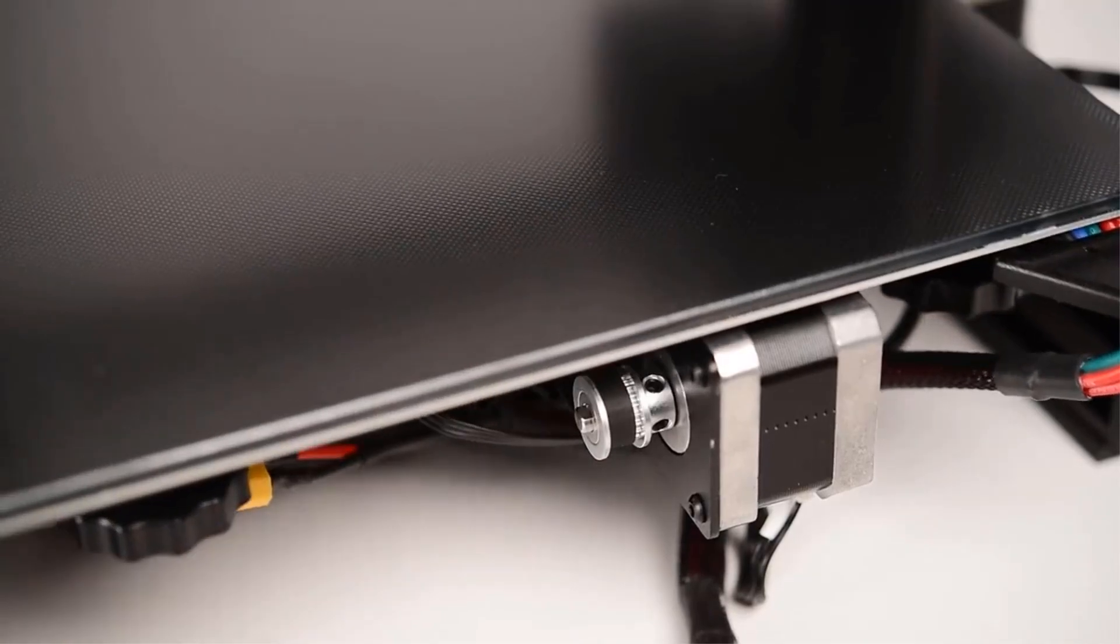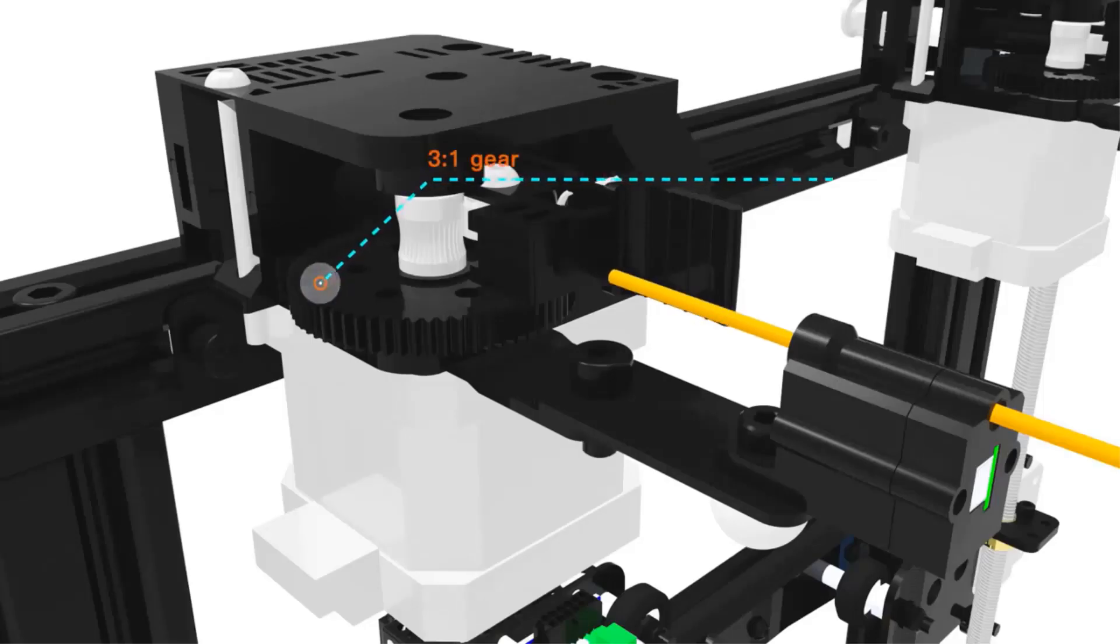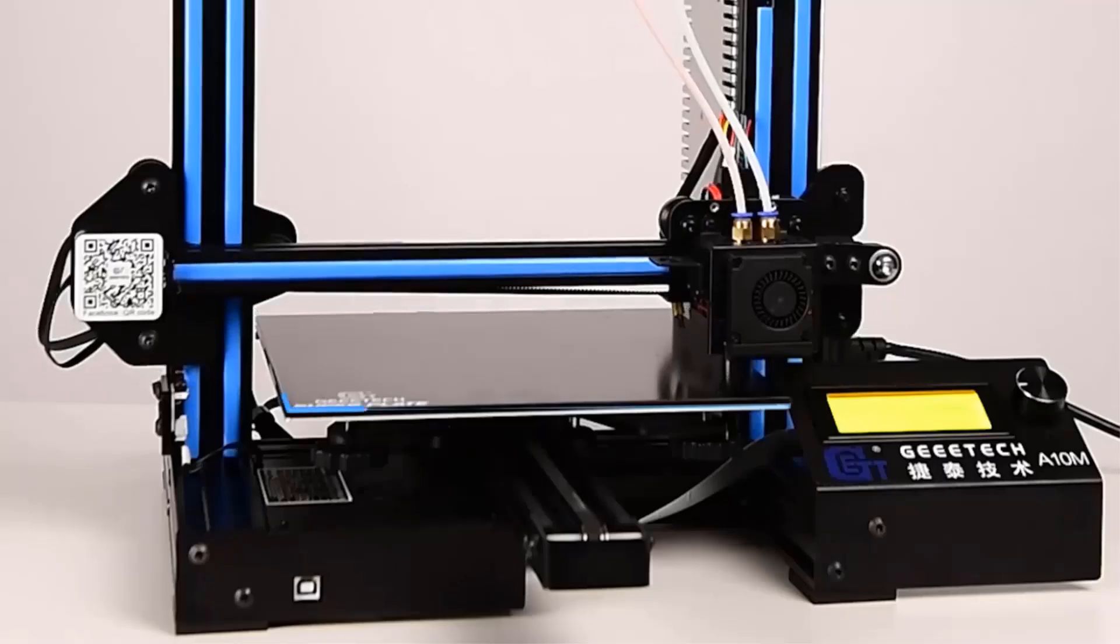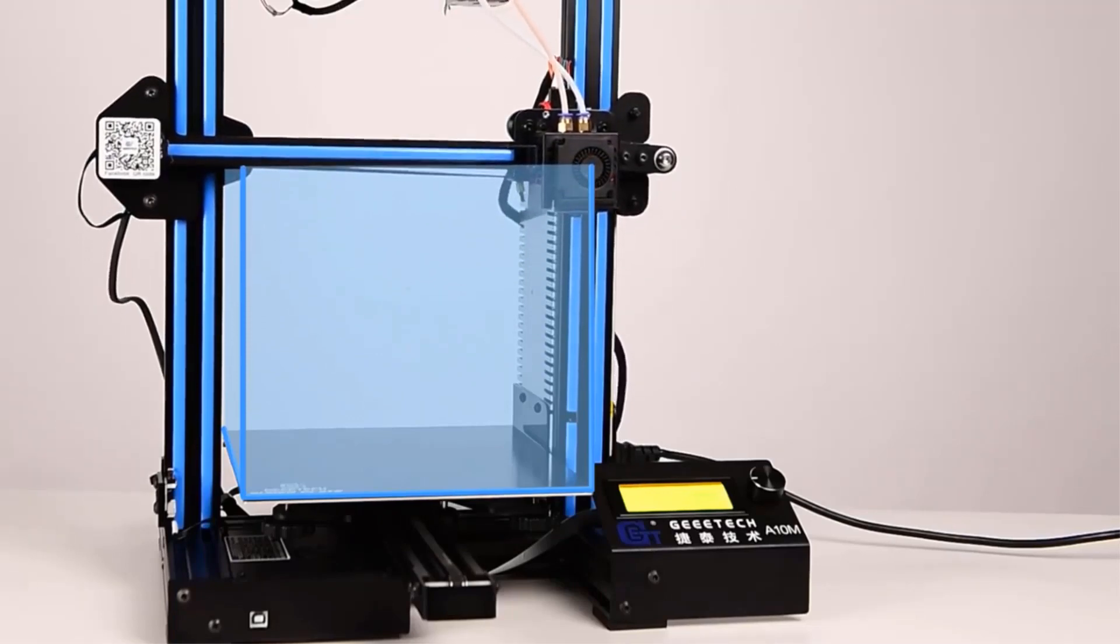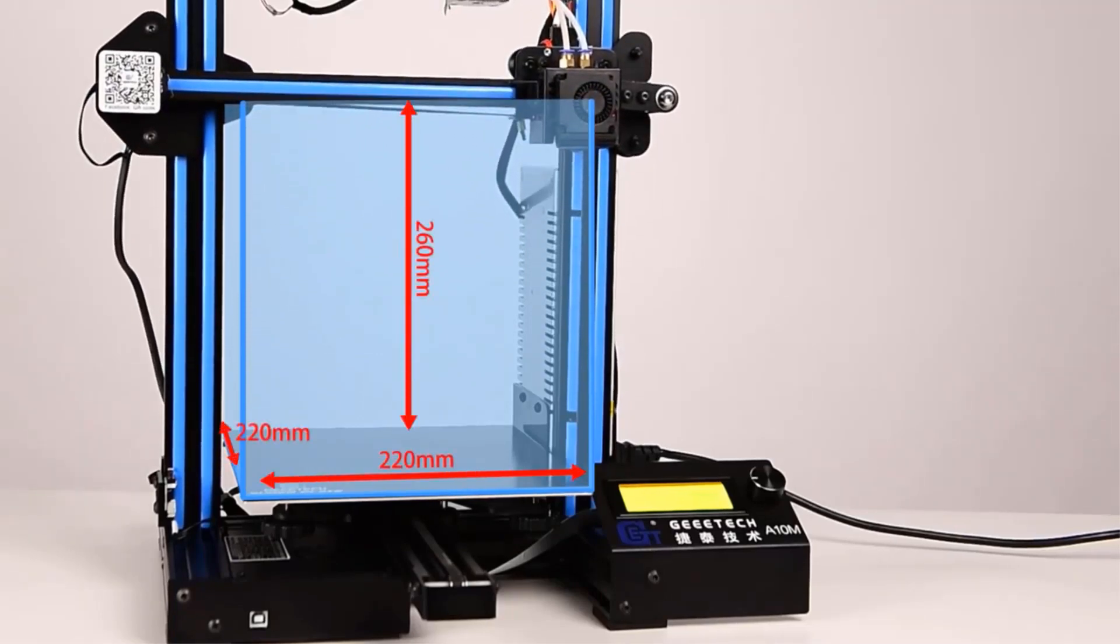The A10M features an integrated building base, which provides stability and ensures accurate printing. This base also simplifies the assembly process, making it a suitable choice for DIY enthusiasts who enjoy building their own printers.